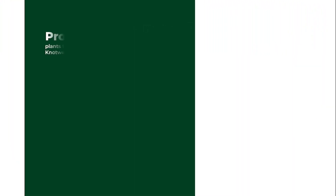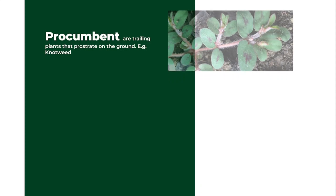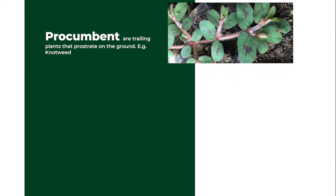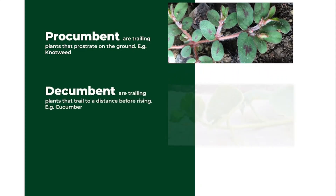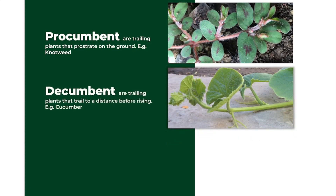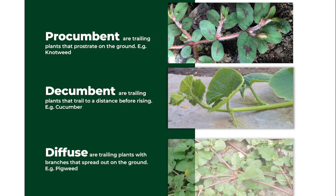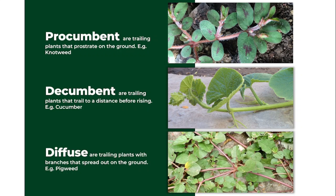When a trailing plant is prostrate, it is said to be procumbent, and plants in this category include the nut and wheat. When a trailing plant raises to a point and starts rising, it is said to be decumbent, and plants in this category include the cucumber. When trailing plants tend to have a lot of branches lying on the ground, it is said to be diffuse, and an example of a diffuse plant is the pigweed.